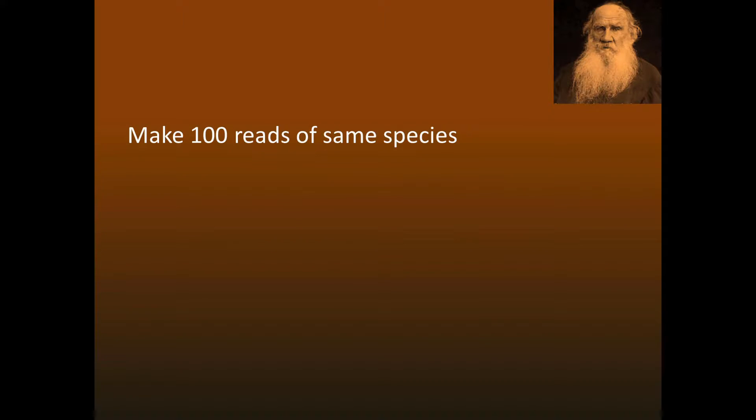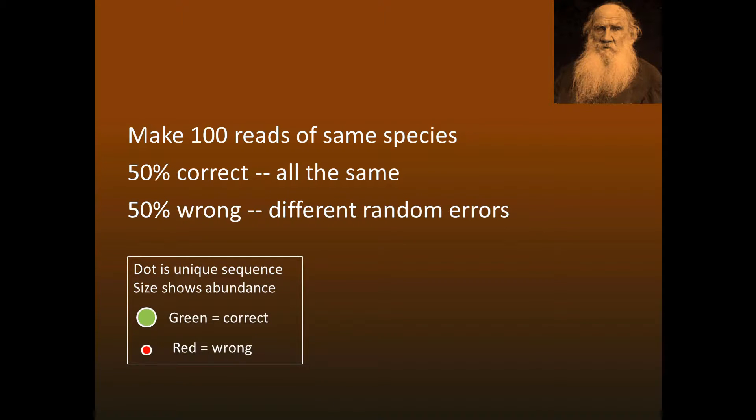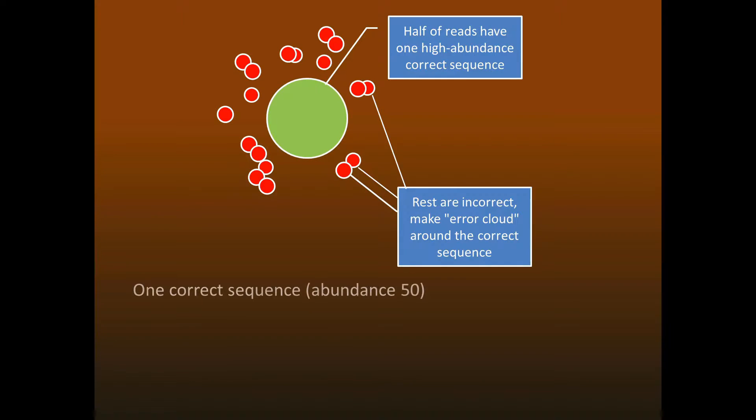Now consider what happens if there are 100 reads of the same species. Remember that half the reads are correct, and these will all have the same sequence. However, the incorrect reads will have different random errors. We can visualize this using a diagram where dots are sequences, and the size of each dot represents abundance.